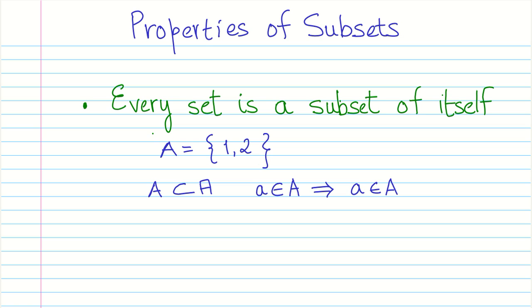Now the first and foremost is that every set is a subset of itself. So if we just take a simple example, let's say that we have a set A which has just two numbers, 1 and 2. Now I can say that A is a subset of A, which means the set is a subset of itself.